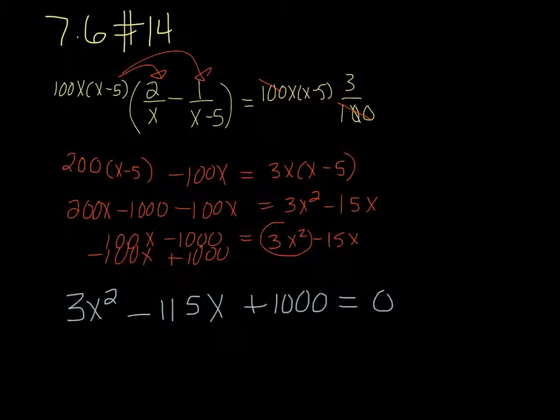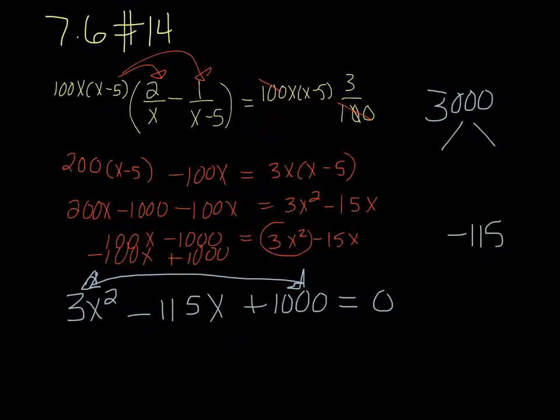So now we have a quadratic equation to solve. A rather difficult one. The only method of solving these types of equations right now that we have is factoring. So we would multiply the 3 and the 1,000 together and that's 3,000. And we need factors of 3,000 that add up to negative 115. So what I do, since it's such a big number and it'll have so many different pairs of factors is I go into my calculator.